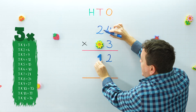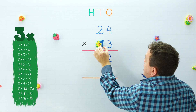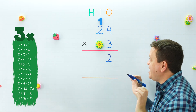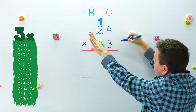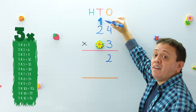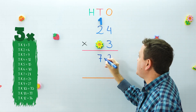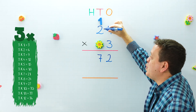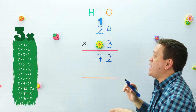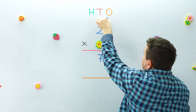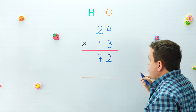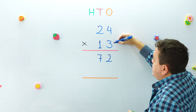What about the one? If I put this digit here it's going to get upset, so we are going to carry the one above the two in the next column. Now we move to the left: three times two equals six, plus one that we carry gives us seven. We finish with the first step.